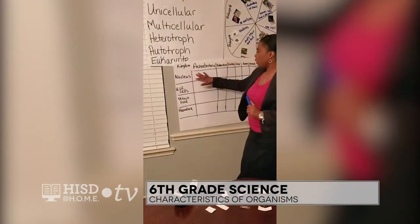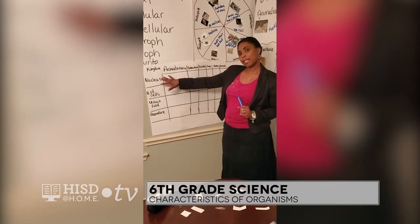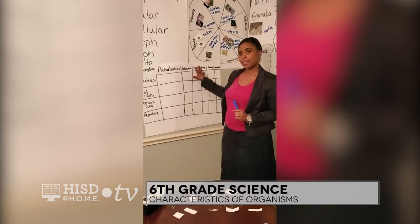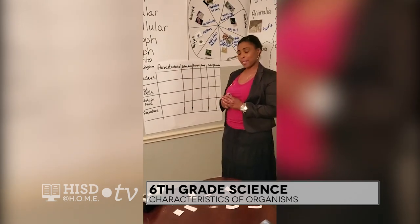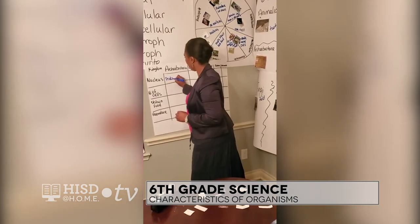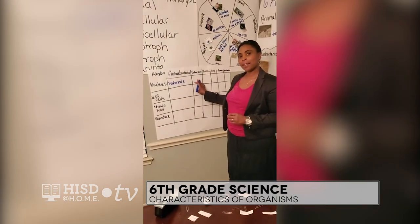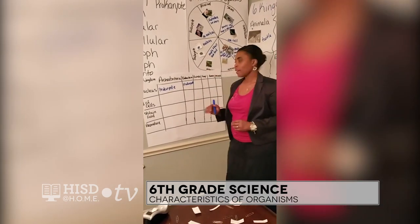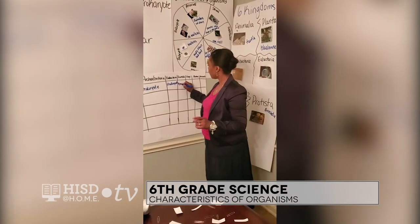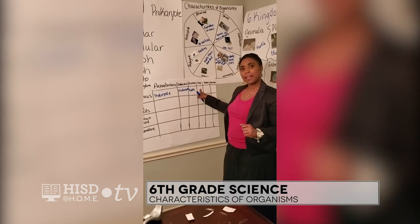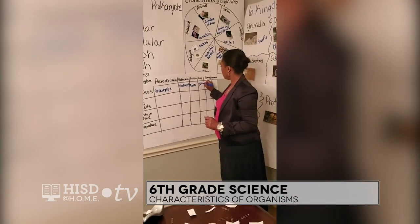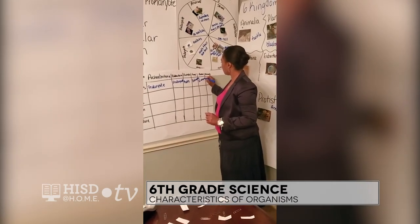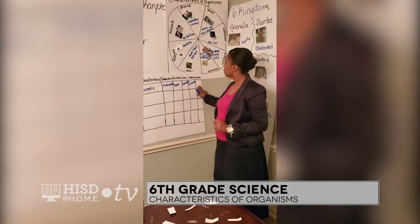The first one we're going to focus on is archaebacteria — does it have a nucleus or not? Remember the characteristics: prokaryotes and eukaryotes. Our archaebacteria is a prokaryote. Our eubacteria is also a prokaryote. Our protista is both — it can be prokaryote or eukaryote. Fungi is eukaryote. Our plantae is eukaryote. And animalia is eukaryote.